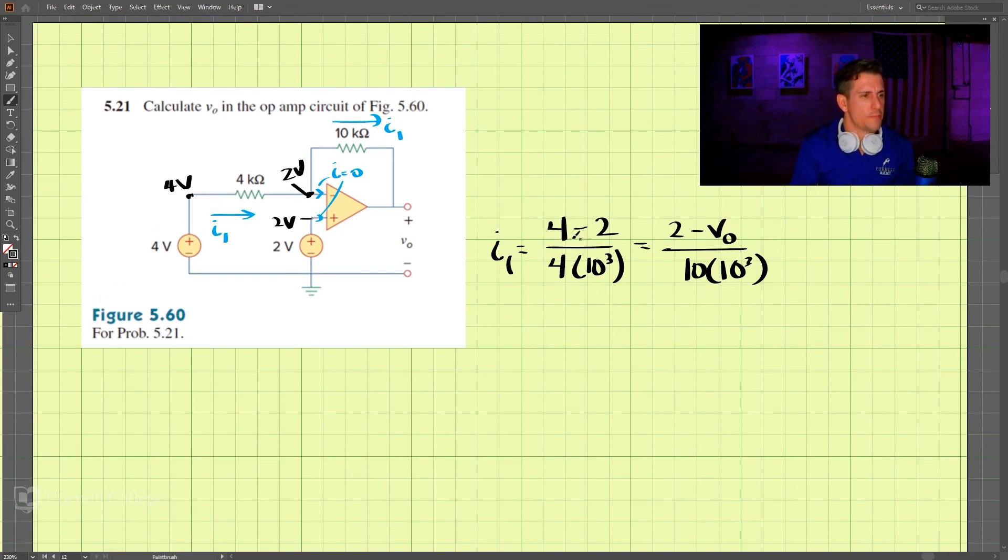Let's move this up so we can do this math. This is 2 there, and these two should cancel each other out if you multiply this one up here. So what we have is 2 divided by 4 equals 2 minus v naught divided by 10, which then is 20 equals 8 minus 4 v naught.